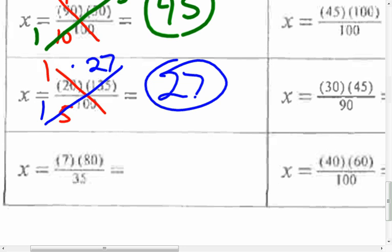I believe we have 7 and 35. That can be reduced. 7 goes in here once. 7 goes in to 35. And doesn't 5 go into 80? 5 going to 80. 5 goes in here once. And 5 goes into 80. How many times? I believe it's 16. Yep. I think that's correct. 16. So 1 times 16 is?